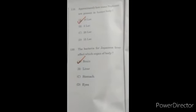Question 119: approximately how many nephrons are present in human body? Approximately 10 lakhs. If you have more knowledge about this, please tell us in the comment box.